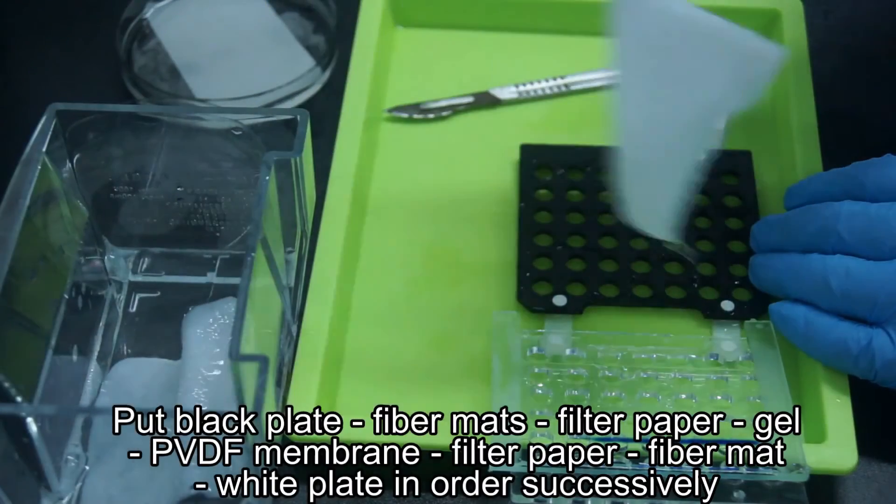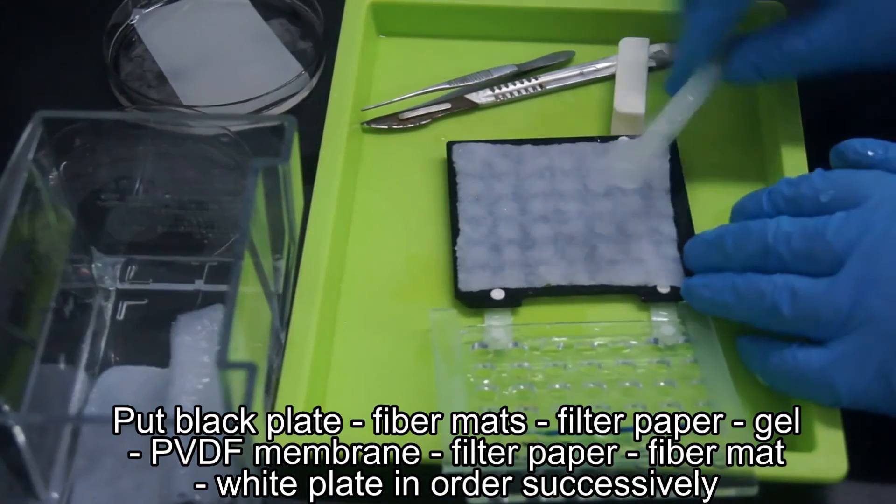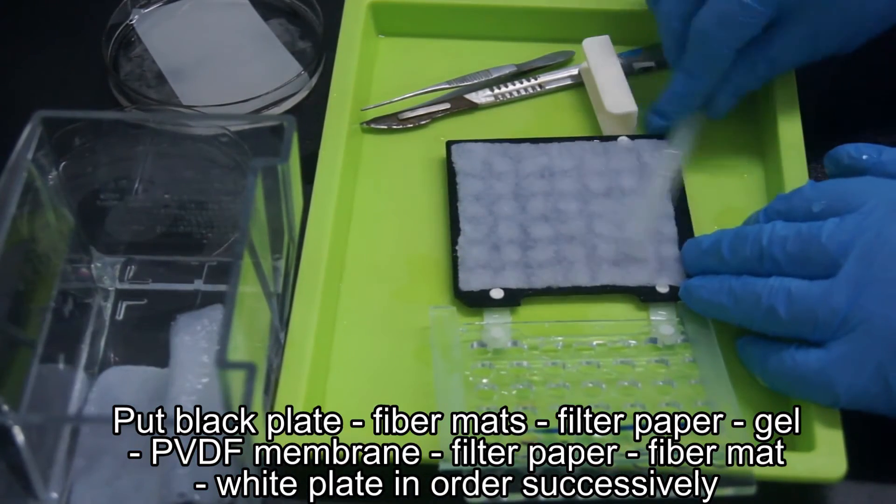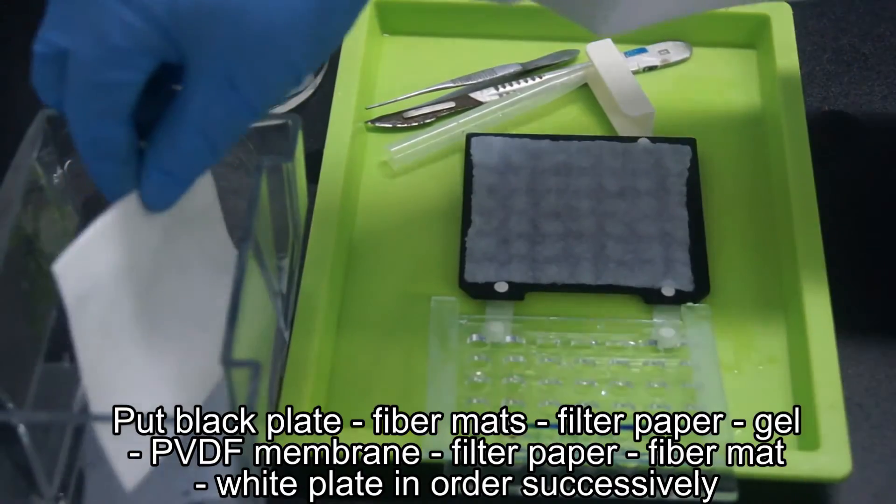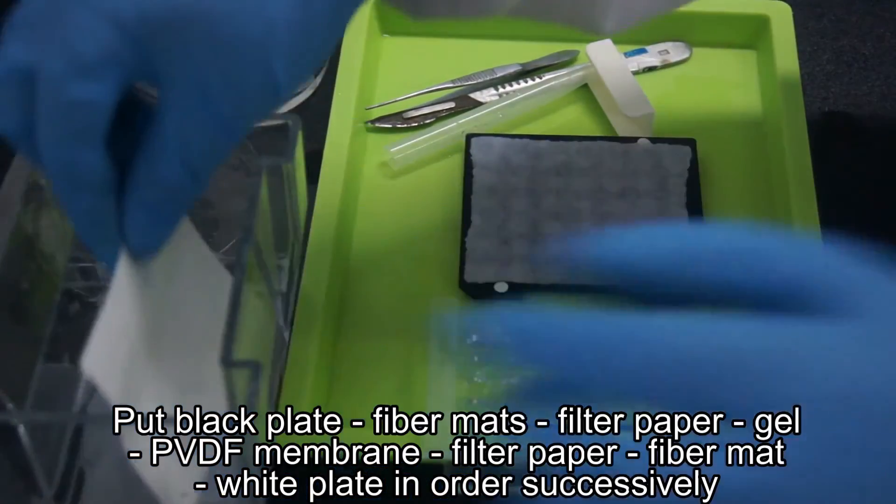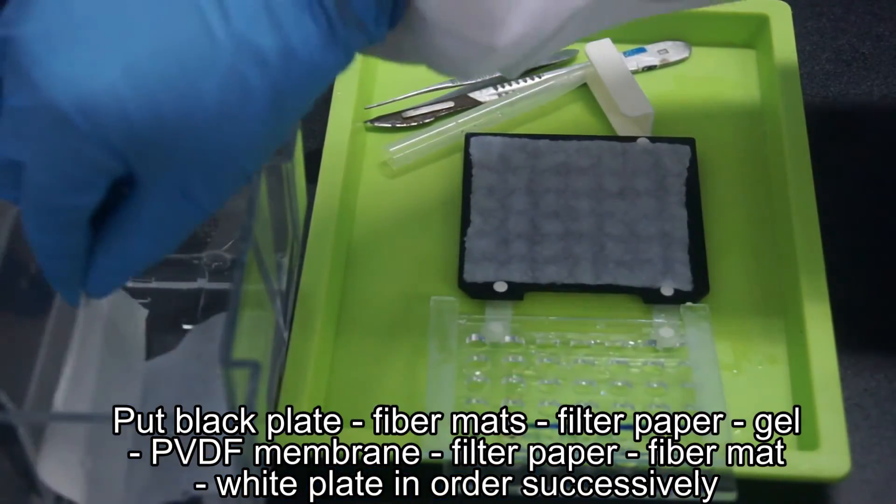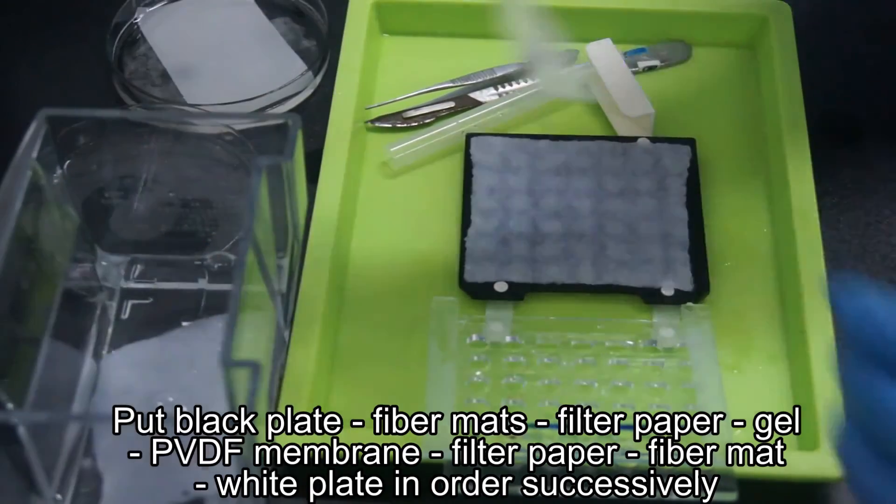Put the related appliances in the following order: Black plate, fiber mats, filter paper, gel, PVDF membrane, filter paper, fiber mat, white plate.